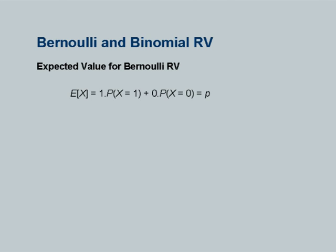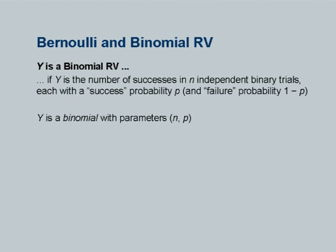The expected value of a Bernoulli random variable: using the basic formula for discrete random variables, it is the sum of x_i times the PMF. There are two values, 1 and 0. So it is 1 times p plus 0 times (1-p), giving p. So the expected value of a Bernoulli random variable is p. If you flip a coin repeatedly and the probability of heads is p, the expected value over several trials equals p.